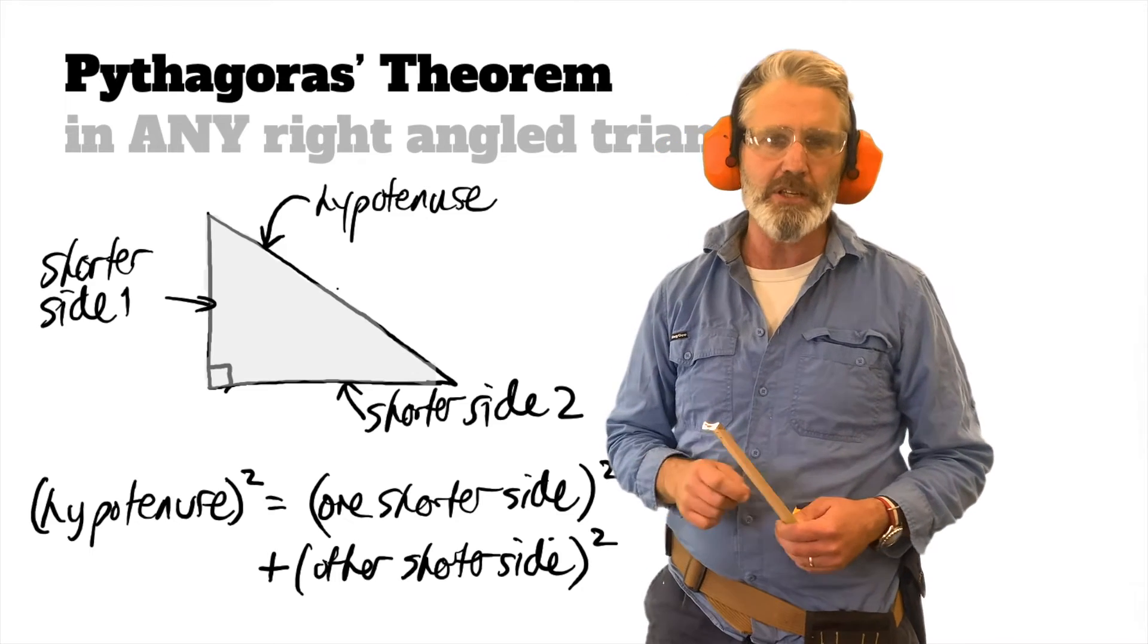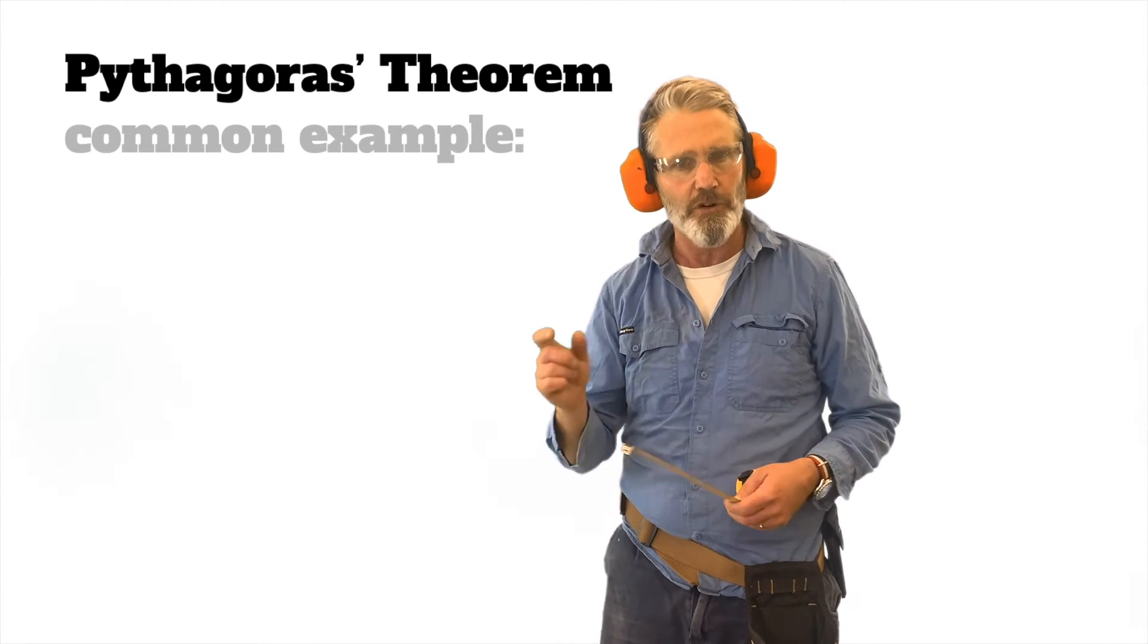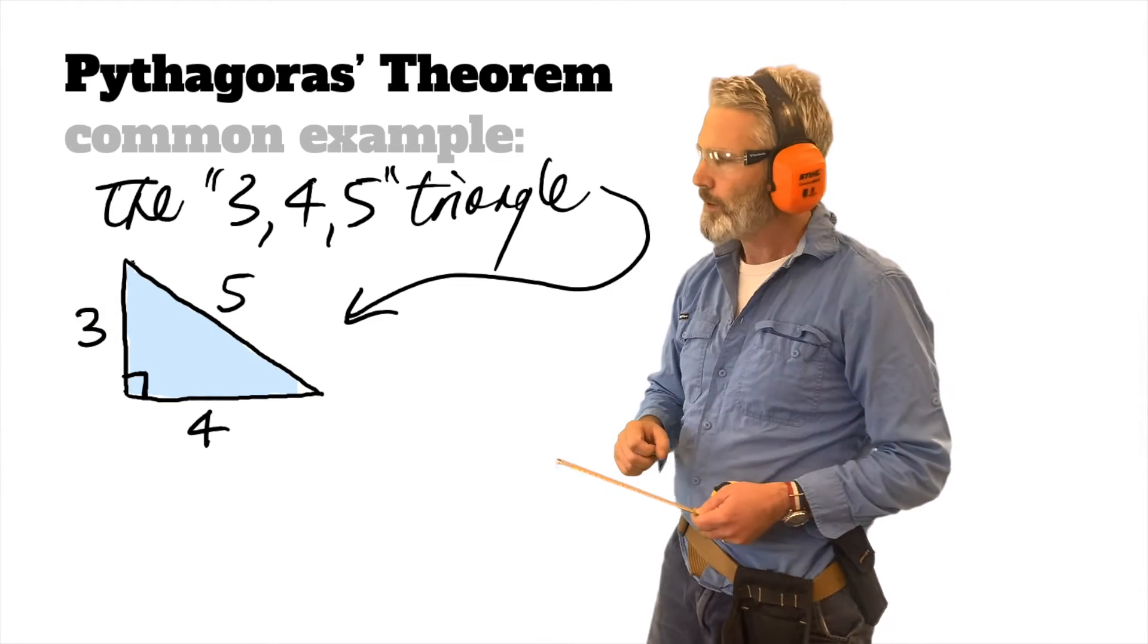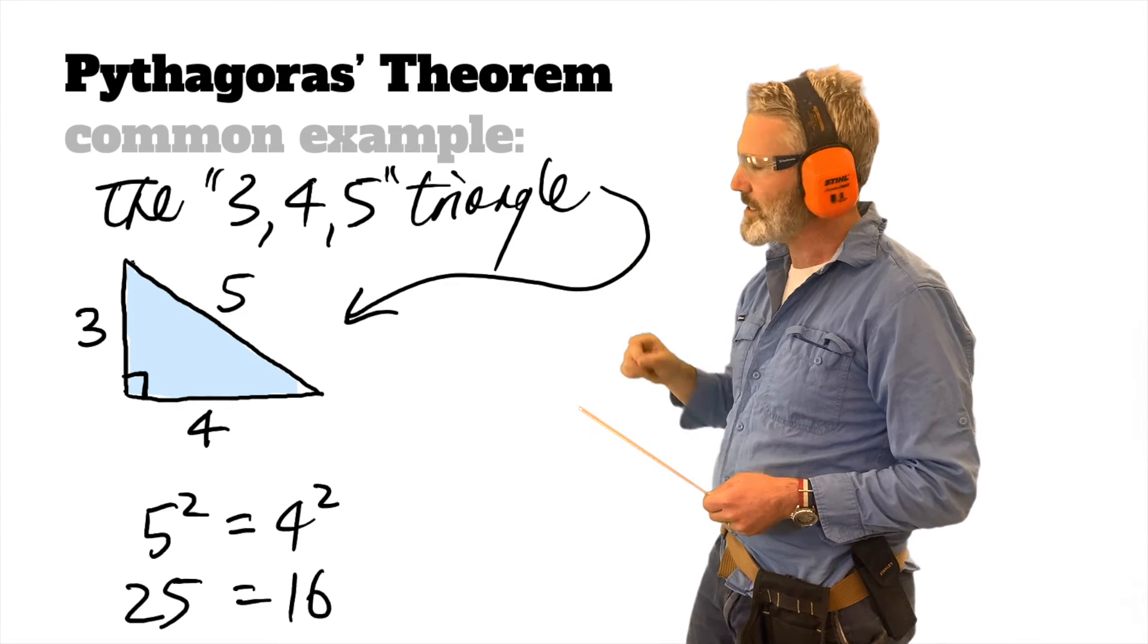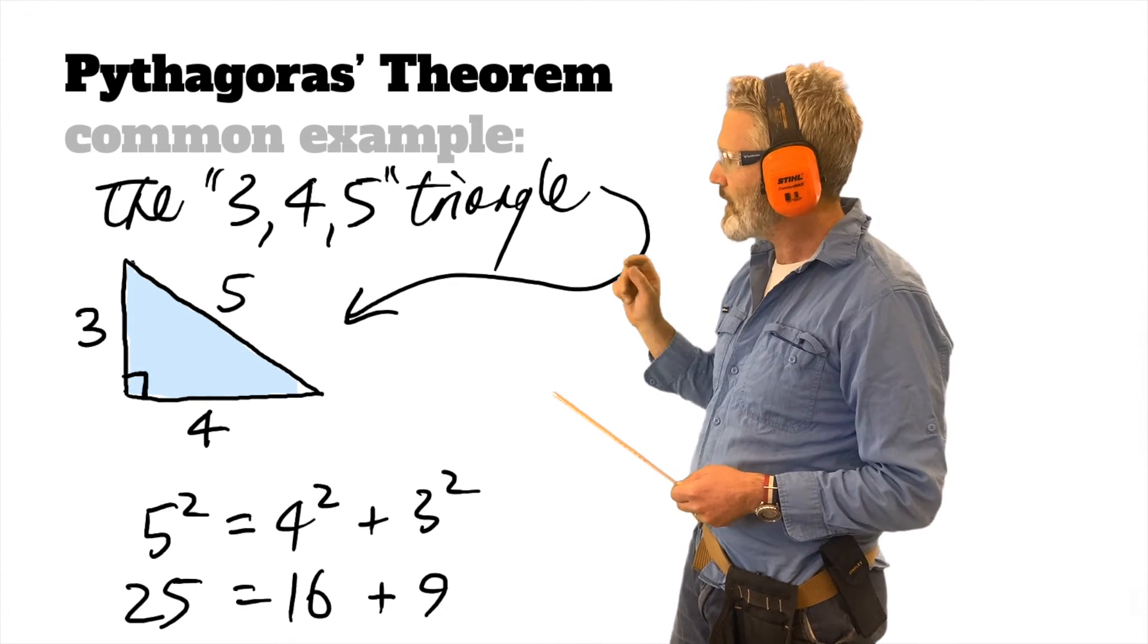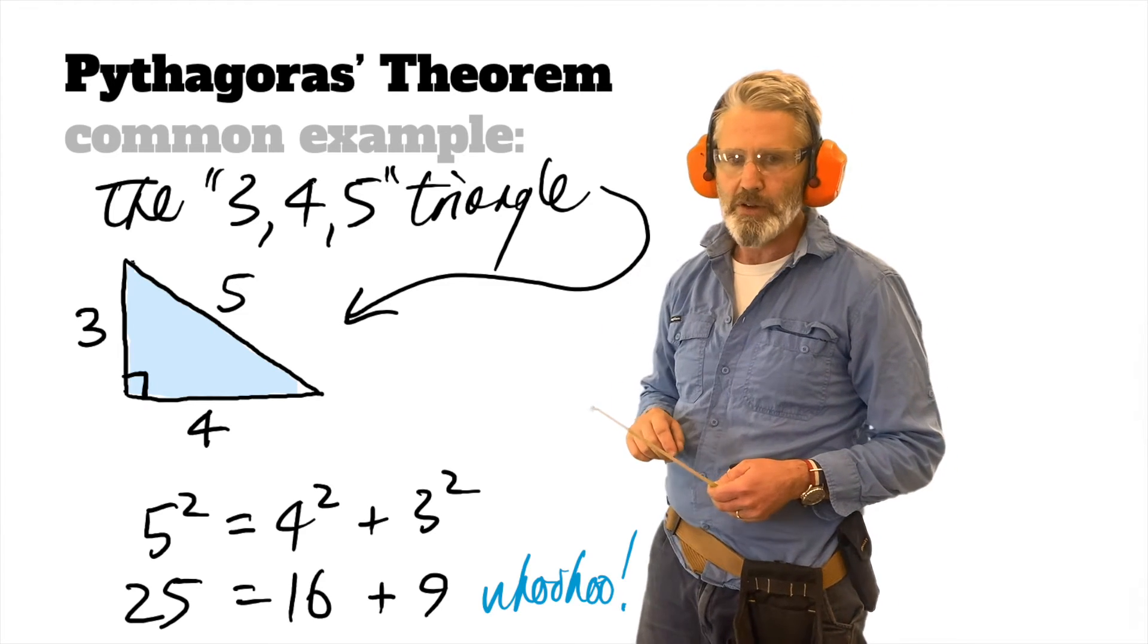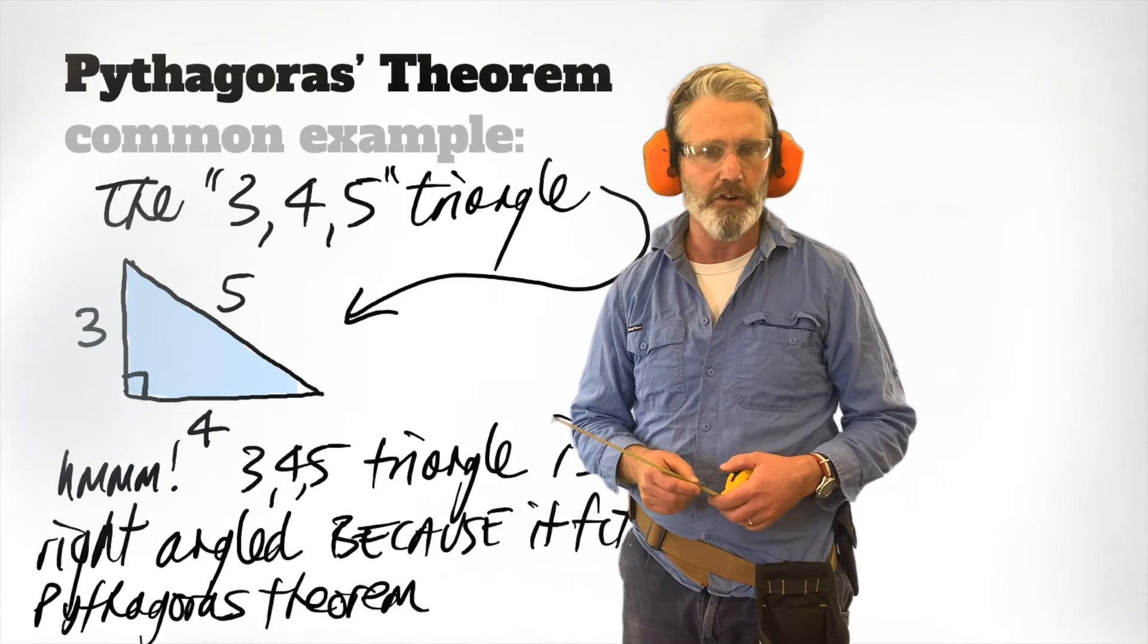Now there's a really famous ratio of three numbers that work with this, that's the 3-4-5 triangle. That works because 5 squared is 25, 4 squared is 16, 3 squared is 9, and 16 plus 9 equals 25. So we actually have 3-4-5 being a triangle with a 90-degree angle.